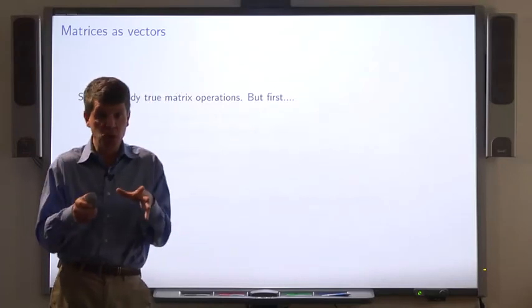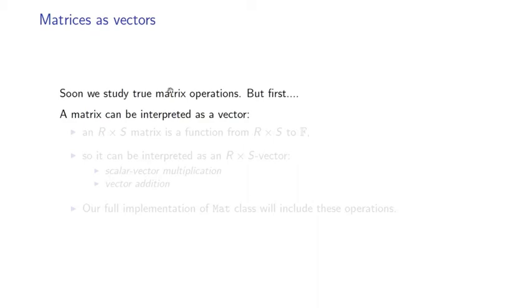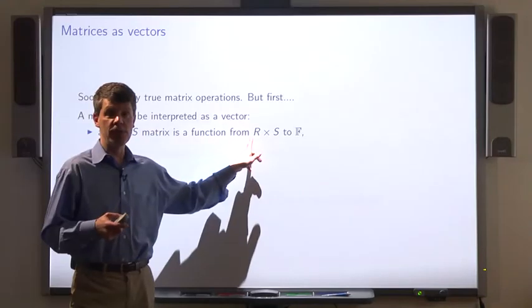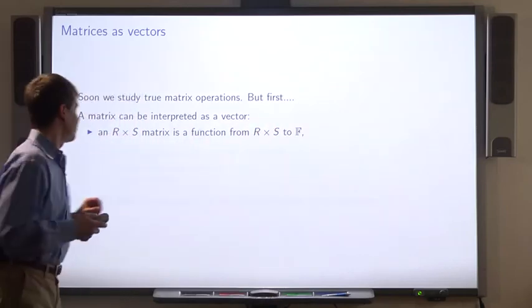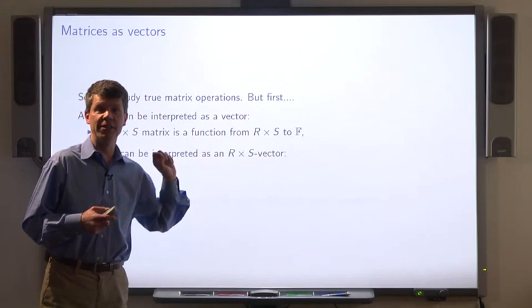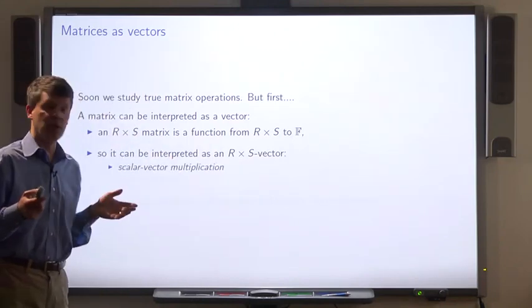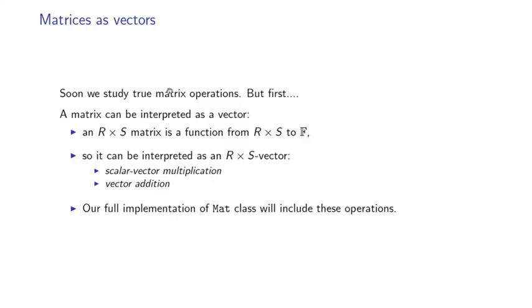Pretty soon we'll explore the operations on matrices. But first let's note that a matrix can be interpreted as a vector. After all, an R by S matrix is just a function from the Cartesian coordinate R cross S to the field F. So it can be interpreted as an R cross S vector. Thus we can do scalar vector multiplication and vector addition. And our implementation of matrices will incorporate those operations.